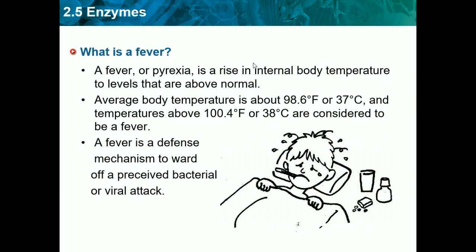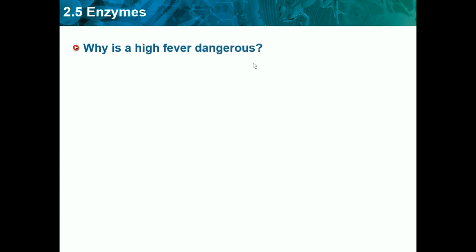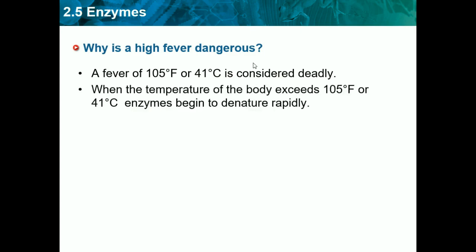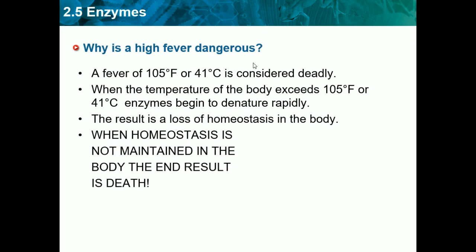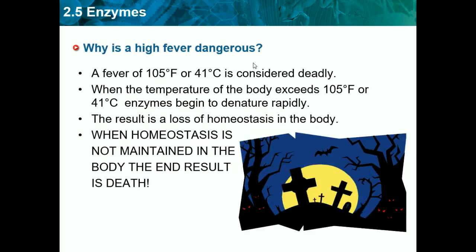A fever is a defense mechanism to ward off bacterial or viral attack, and it helps keep our homeostasis — our internal body temperature — the same. Why is a high fever dangerous? A fever of 105°F is considerably deadly. When the body temperature exceeds 105°F, enzymes begin to denature rapidly. The result is a loss of homeostasis in the body, and when homeostasis is not maintained, the end result is death. The enzymes stop working, stop helping our body do its natural things, and all proteins end up breaking down — which makes up most of our muscles and everything in our body. Nothing is made or generated in our body because the enzymes can't do anything.